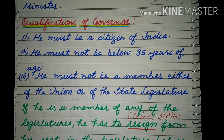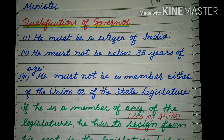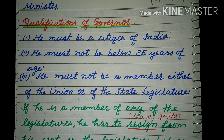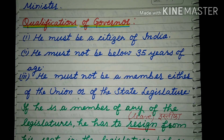Now we will discuss the qualifications of the Governor — एक राज्यपाल की qualification क्या होनी चाहिए. He must be a citizen of India — उसे India का नागरिक होना चाहिए. He must not be below 35 years of age — 35 years से उसकी आयु कम नहीं होनी चाहिए. He must not be a member either of the union or of the state legislature.